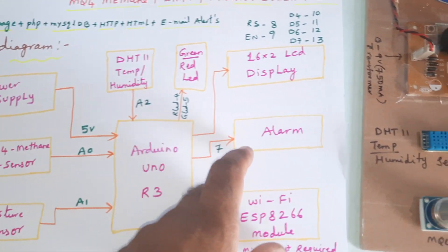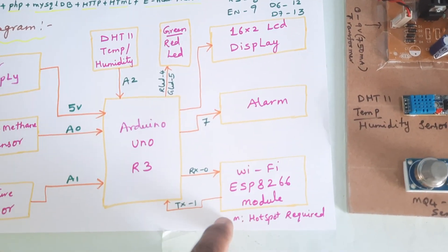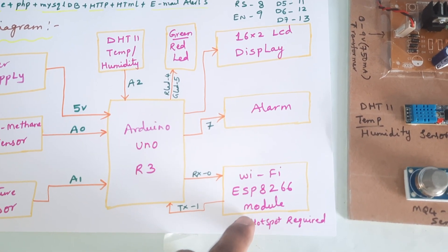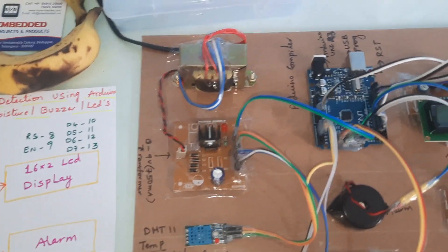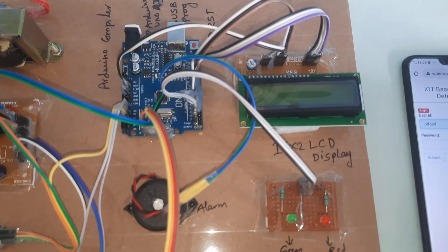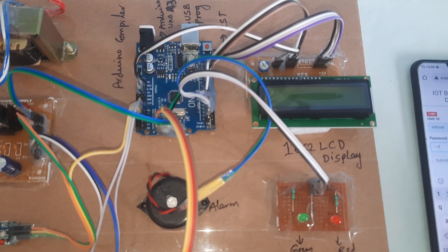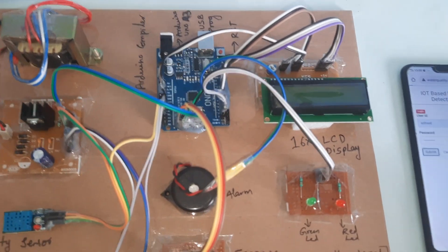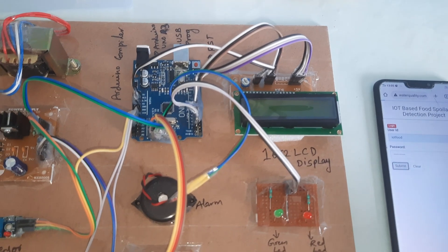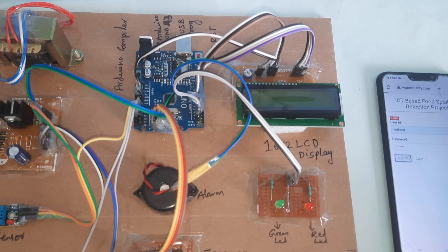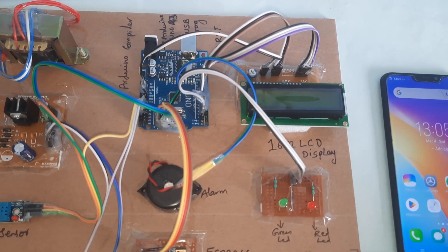If any methane gas is detected, the alarm turns on, the red LED turns on, and the data is sent to the mobile hotspot internet. It will then send the data to the webpage and we will get email alerts. Here we can see the email alerts — IoT Food, IoT Food 123 — taking data from the mobile hotspot.